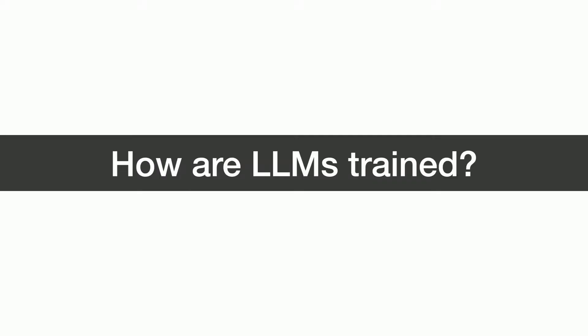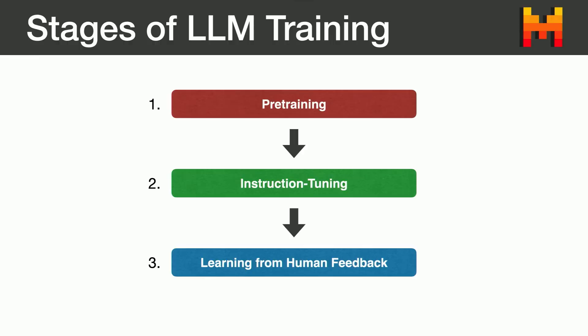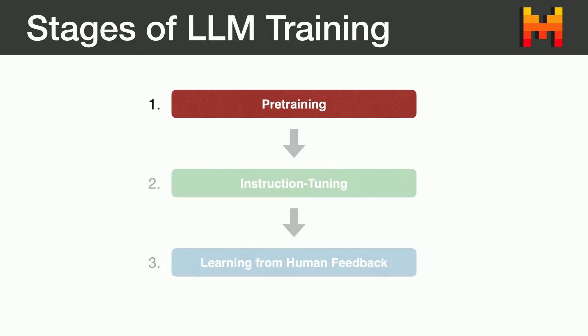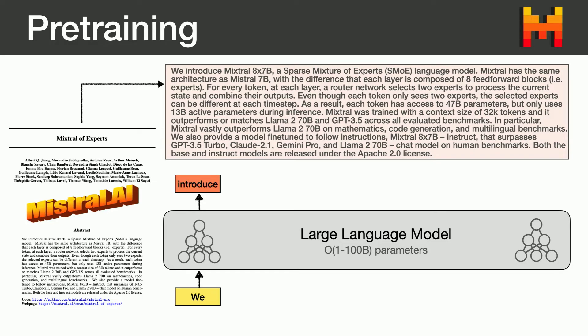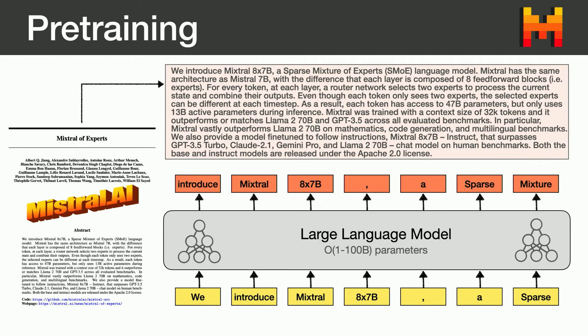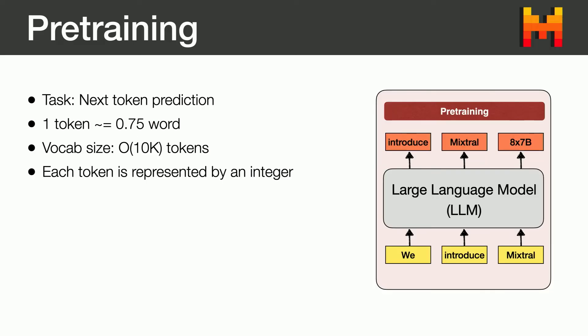How are these open source models trained? I'll give a very high-level overview of the different stages of LLM training. Typically, LLMs are trained in three stages: pre-training, instruction tuning, and learning from human feedback. The idea behind pre-training is very simple — you take a piece of text and pass it word by word or token by token through the large language model and ask the model to predict the next token. Each token is roughly 0.75 words. The vocabulary size is roughly tens of thousands of tokens, or sometimes hundreds of thousands, and each token is represented as an integer with an embedding associated with it.